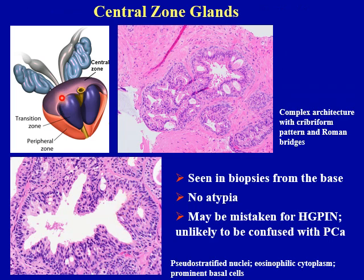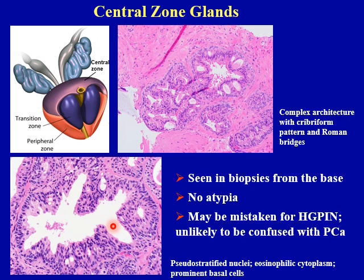Central zone forms the base of the prostate gland. Therefore, central zone glands are seen in biopsies taken from the base of the prostate. At low power, you can see central zone glands have complex architectural width with cribriform pattern and Roman bridges. At high power, you can see these glands are composed of pseudostratified nuclei with eosinophilic cytoplasm and very prominent basal cells around these glands. However, you should not see nuclear atypia in these glands. Central zone glands may be mistaken for high-grade PIN, but they are unlikely to be confused with prostate cancer.